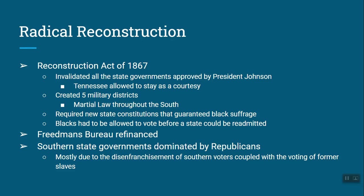This led to Radical Reconstruction. The Reconstruction Act of 1867 invalidated all the state governments Andrew Johnson had approved, essentially scratching out all Reconstruction work done so far. The only state government allowed to remain was Tennessee — just as a courtesy to Johnson since it was his home state, not because Tennessee was doing better. The Reconstruction Act also created five military districts throughout the South, which was placed under martial law with US Union soldiers patrolling.